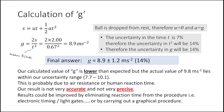Our calculated value of g is lower than expected, but the actual value of 9.8 m/s² lies within our uncertainty range — taking plus or minus 14% of 8.9 gives a range of 7.7 up to 10.1. The value is probably lower than expected due to air resistance or human reaction time. Our result is not very accurate or precise, and could be improved by eliminating reaction time using electronic timing or light gates, or by carrying out a graphical procedure.